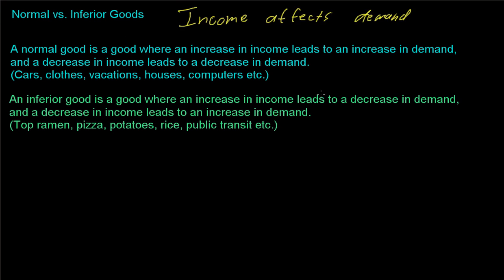And so basically economists have split it up into two different categories: either a normal good or an inferior good. So a normal good is a good where an increase in income leads to an increase in demand and a decrease in income leads to a decrease in demand.